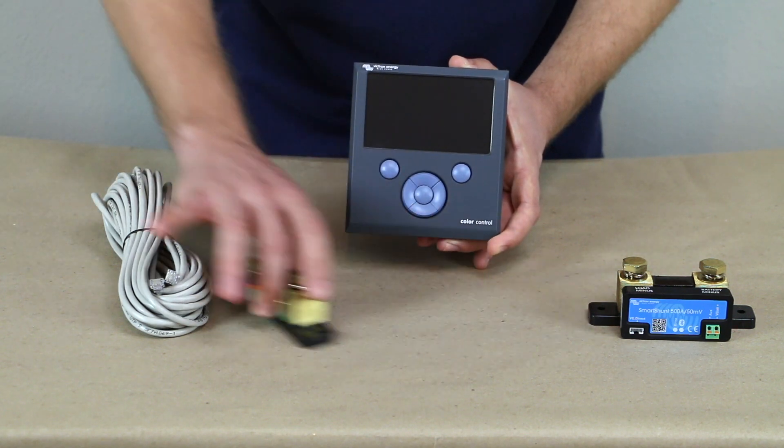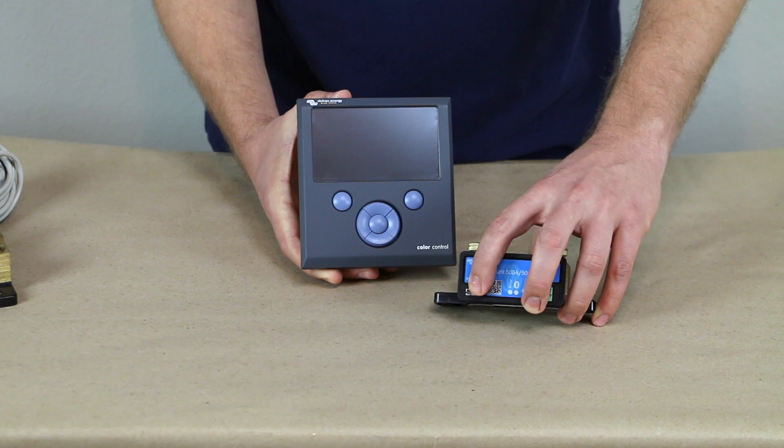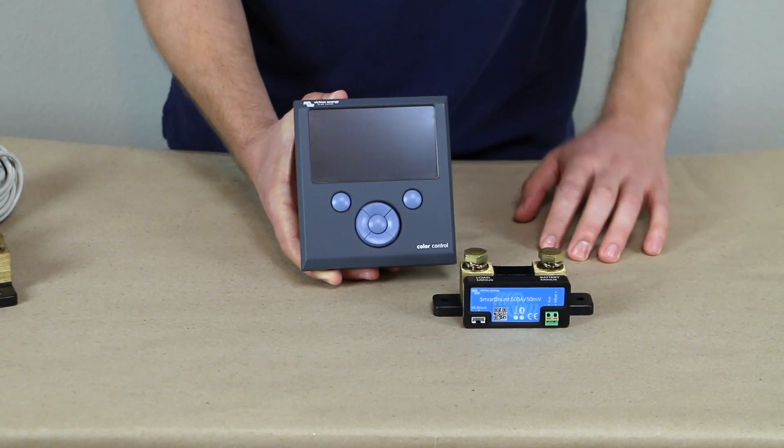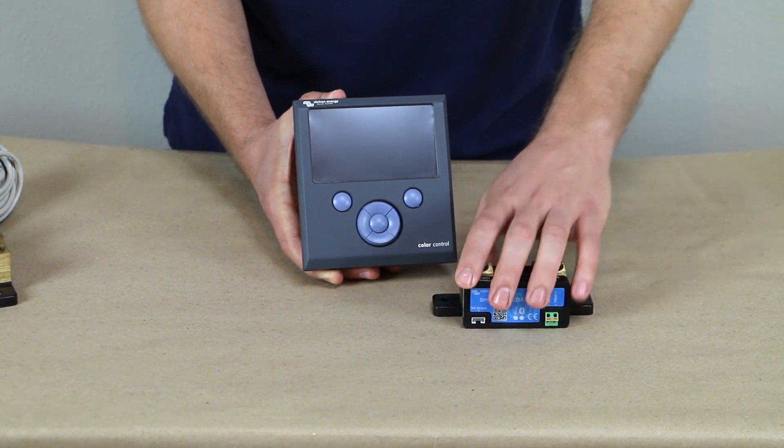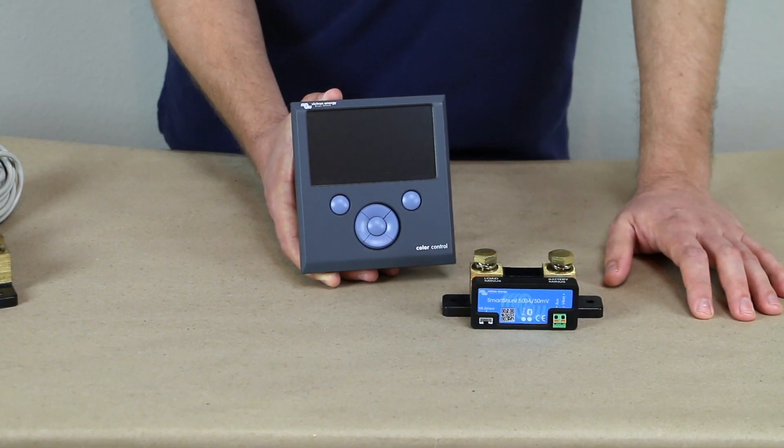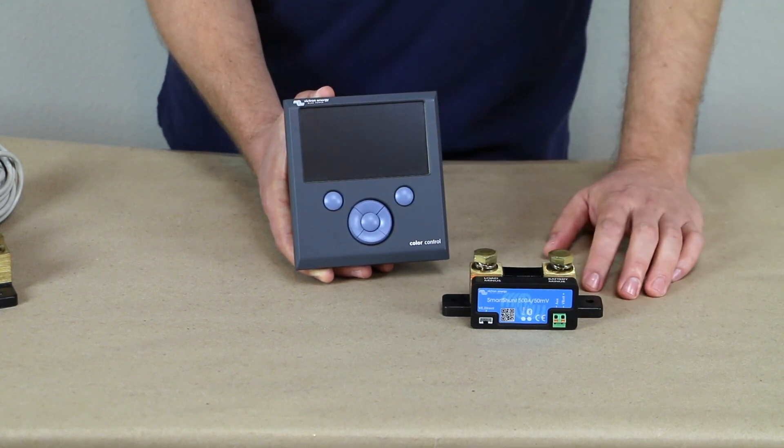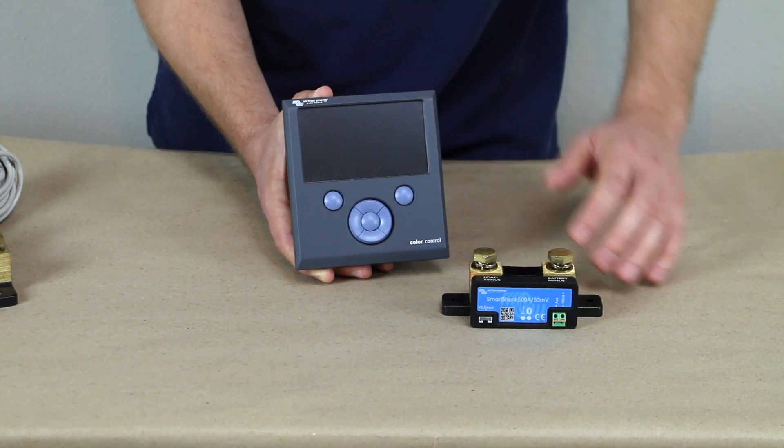So that's where the smart shunt comes in. If you're going to do the GX device, just network that directly to your GX device and this becomes part of the story. If you're going to have a more advanced monitoring system and this will tie in with all your other power metrics there at the GX device.